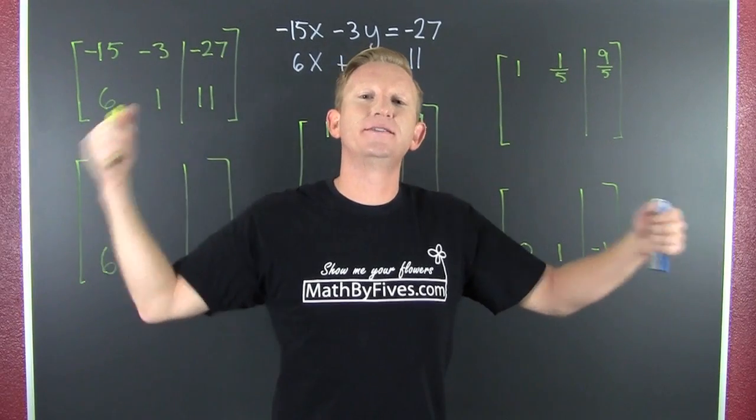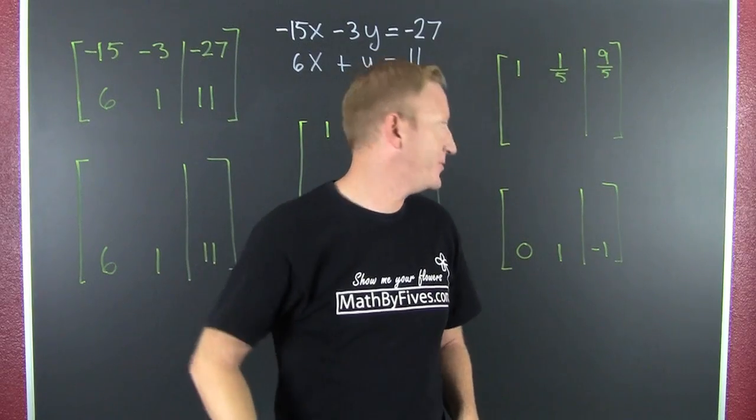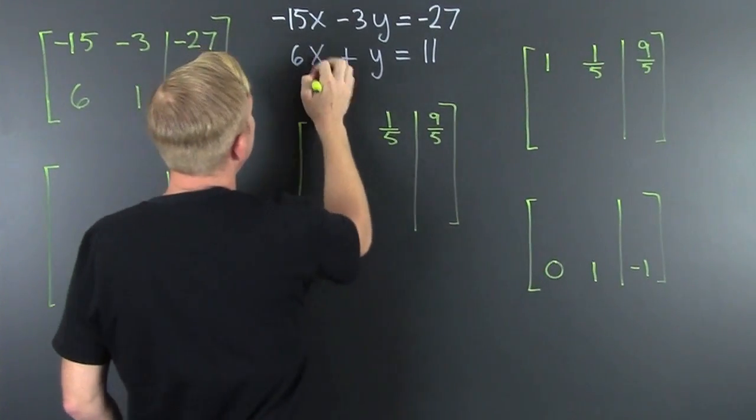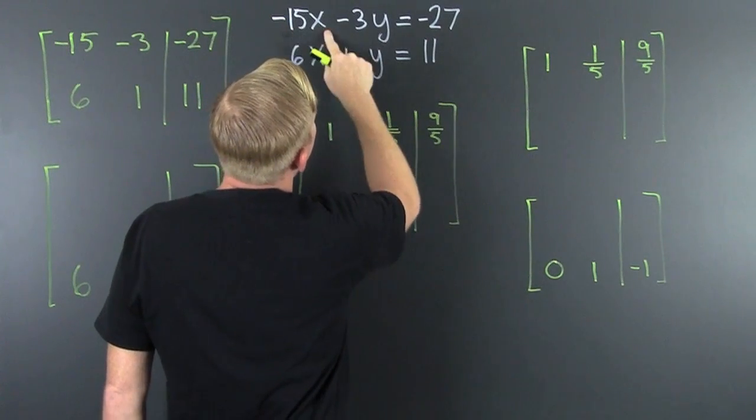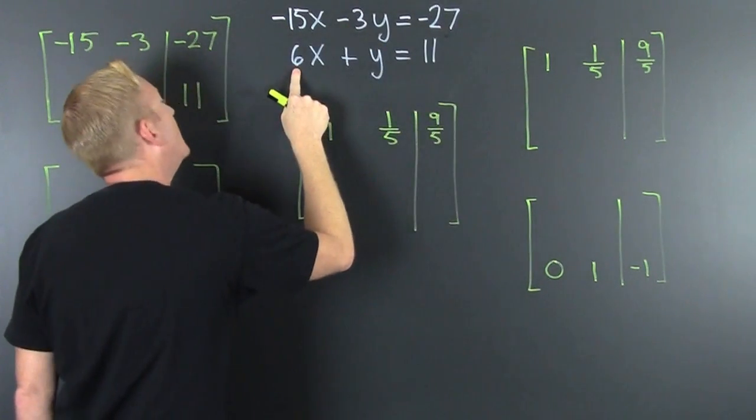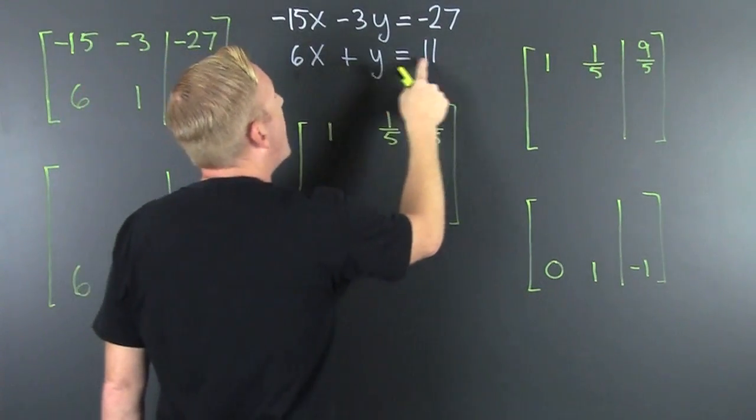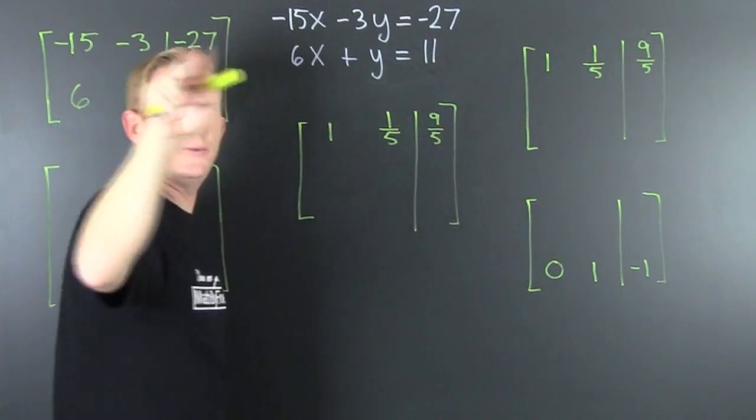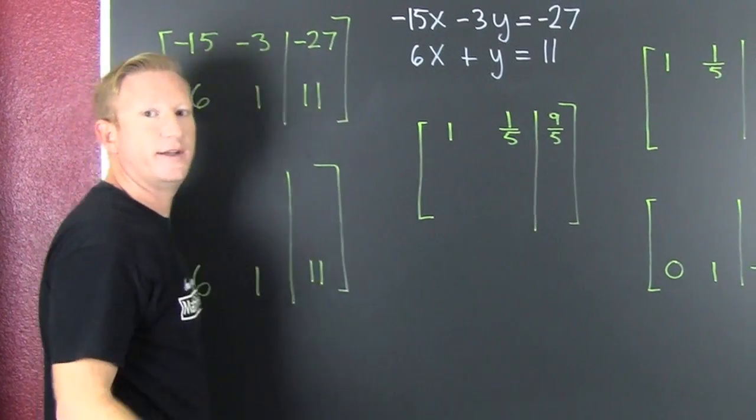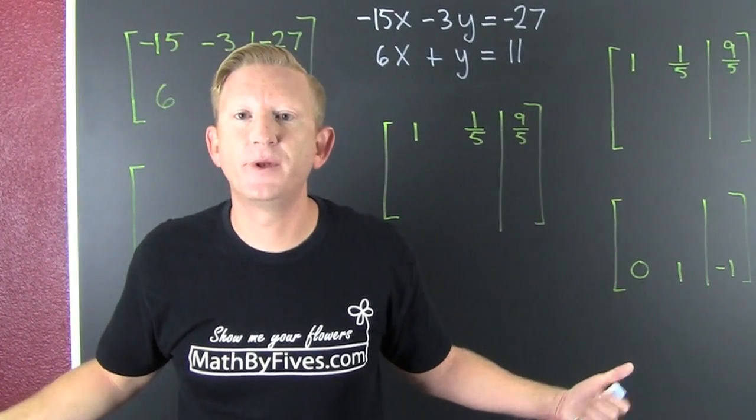Solving systems of equations, a 2 by 2, with matrices. Hopefully we can make the connection. Minus 15x minus 3y equals minus 27 and 6x plus y is 11. First thing we do is transform it into a matrix. And then what? We need a game plan.